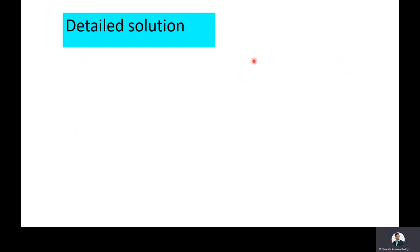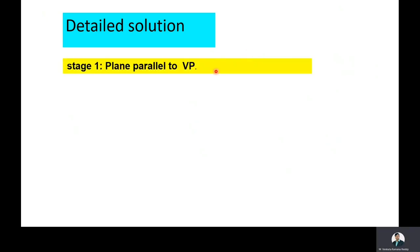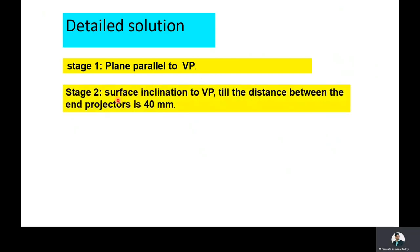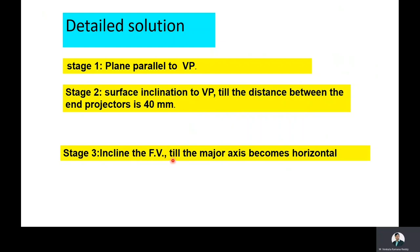The detailed solution is divided into 3 stages. Stage 1: plane parallel to VP. Stage 2: considering the surface inclination to VP till the distance between the end projectors becomes 40 mm. Stage 3: incline the front view so that the major axis becomes horizontal. The minor axis length given in the problem is 40 mm.